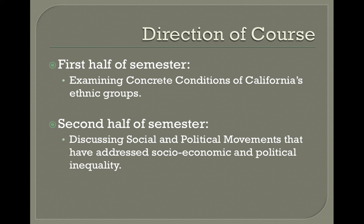Thus, this is the general direction of the course. The first half will highlight the concrete conditions of various racial and ethnic groups and bring to light their historical experiences in California, approaching each section by race, class, and gender. We will use history as a framework to guide our discussions that will give us a better understanding of how inequality and racism persist and continue to be embedded in our social, economic, and political institutions. The second half of the semester will focus on the various social and political organizations and movements that have addressed these issues and have struggled for a more just, equal, and democratic California.